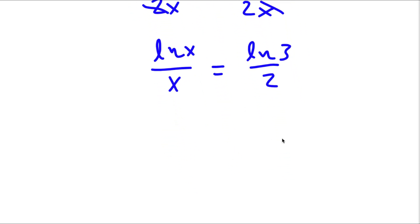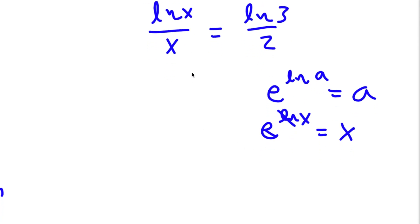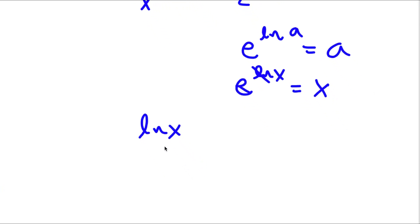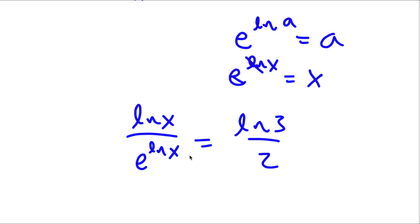Now, if I have something in the form e to the power of ln a, this is the same thing as a. And if I have e to the power of ln x, this equals x, because e to the power of ln — these two cancel out and I'm left with whatever remains. So x here is the same thing as e to the power of ln x, which is equal to ln 3 over 2.